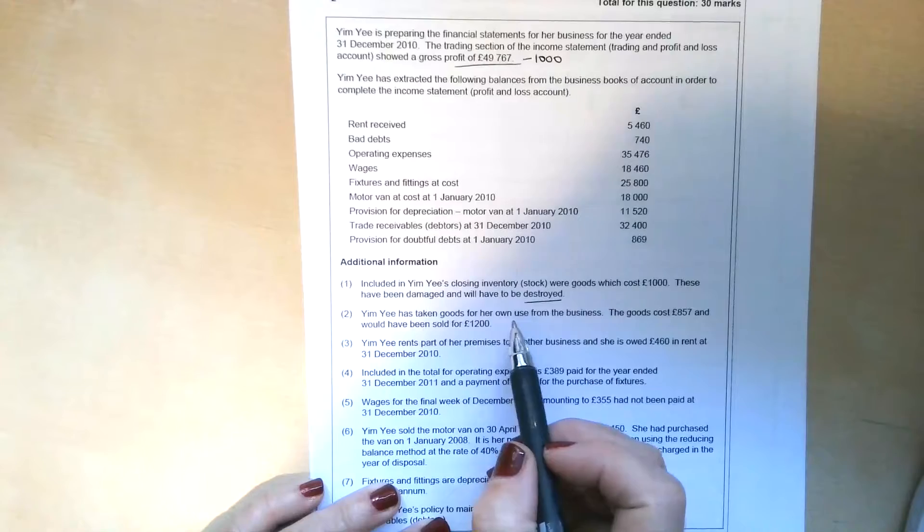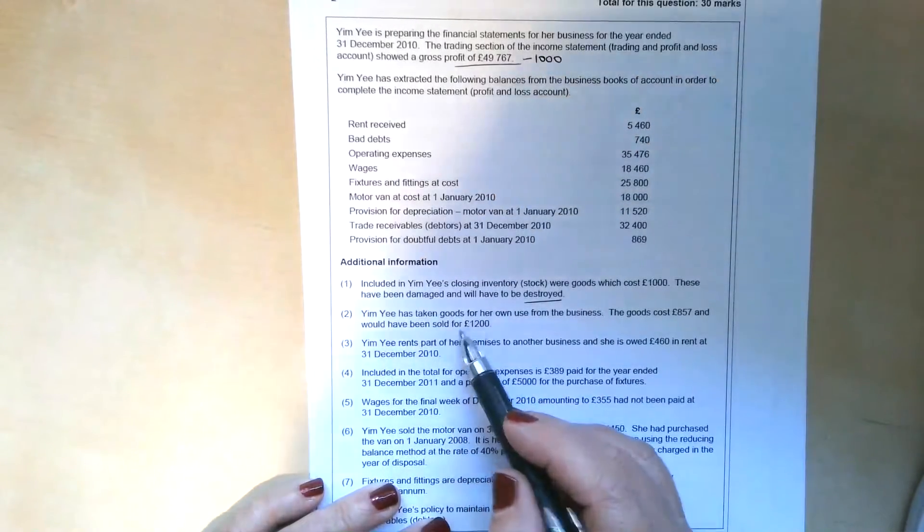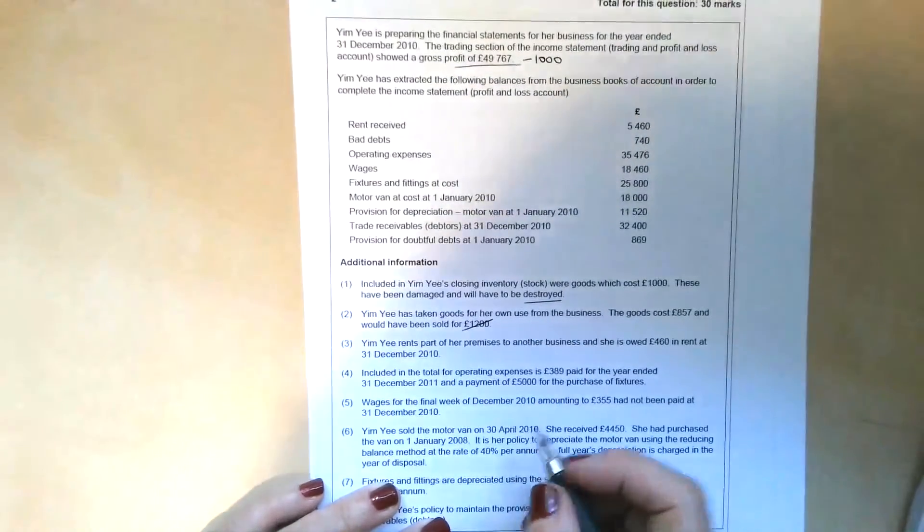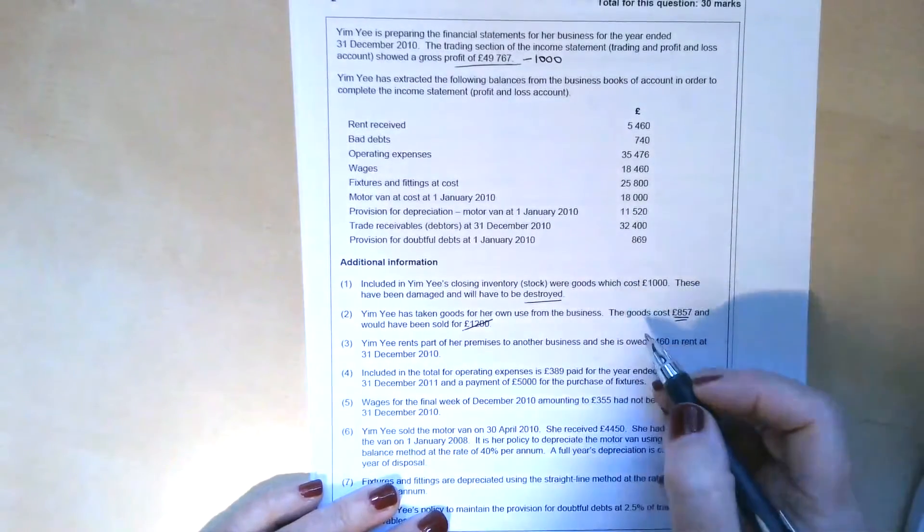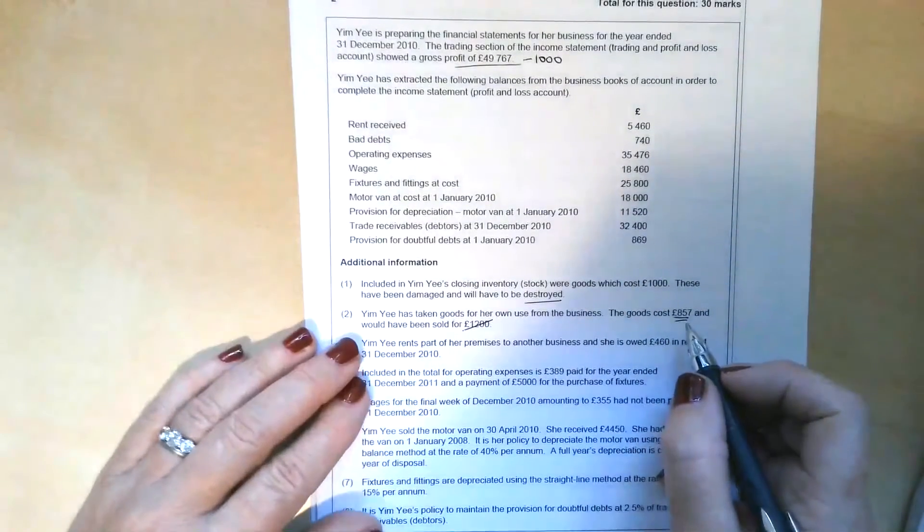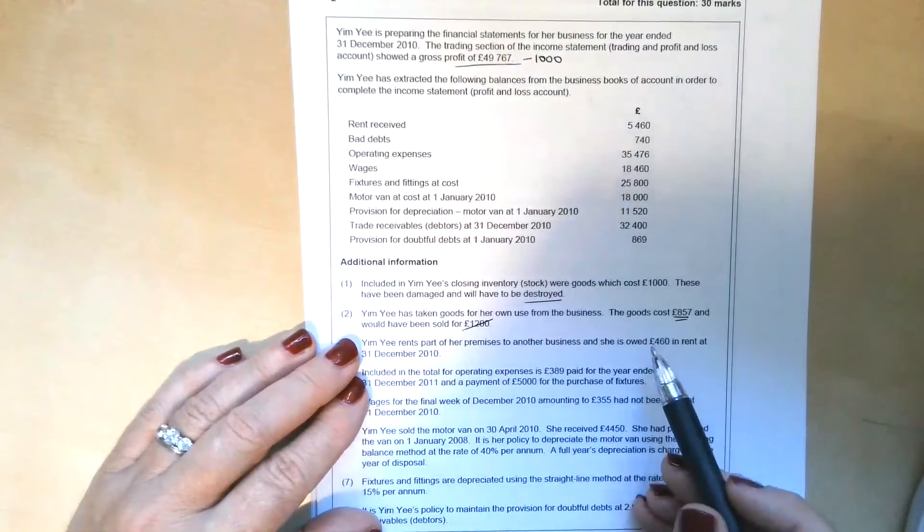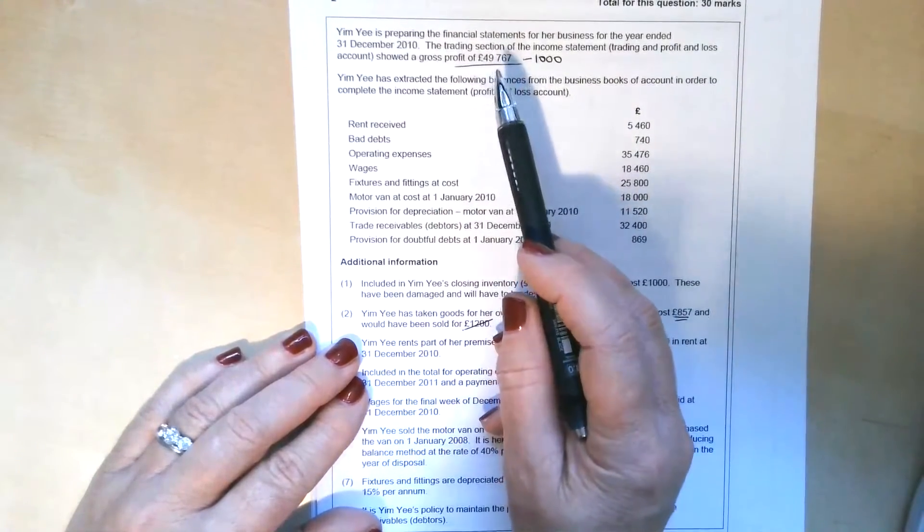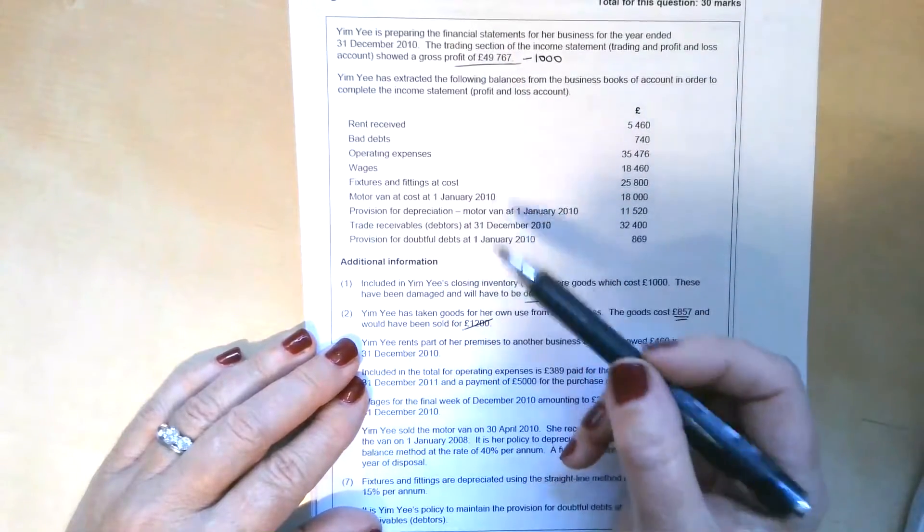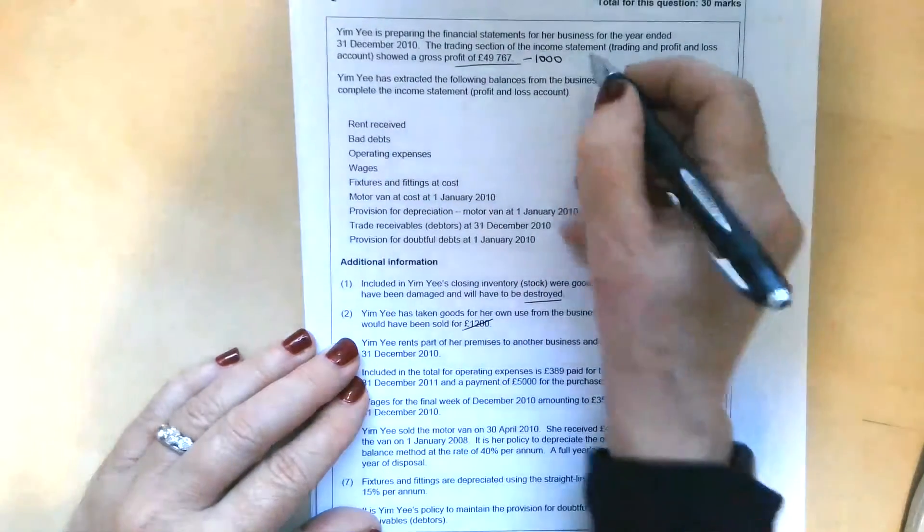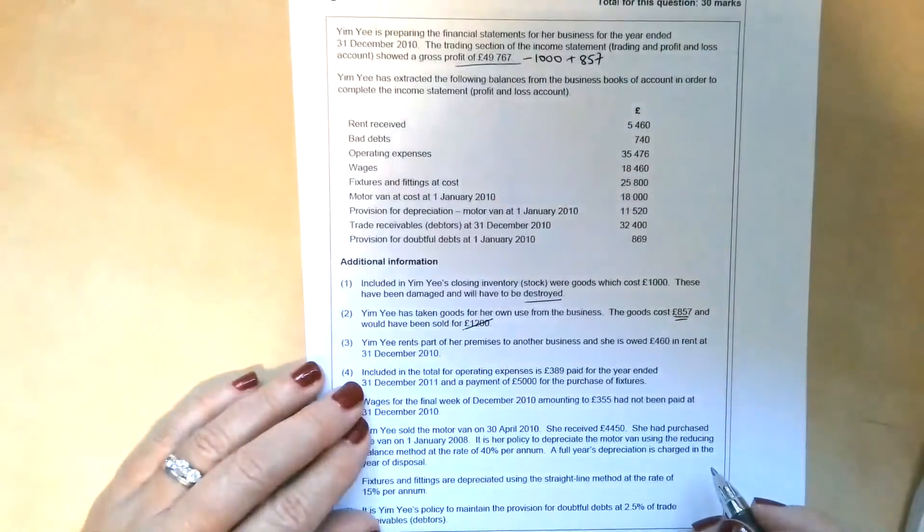Yim Yi has taken goods for her own use from the business. The goods cost £857, and you can ignore what they would have been sold for. Goods for own use, we deduct from purchases and add them to drawings. If we deduct them from purchases, it's going to have an impact on this gross profit figure. Any deduction in purchases is going to result in a deduction to cost of sales. So if we reduce purchases, cost of sales goes down, and that means that gross profit will go up by £857.